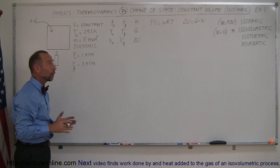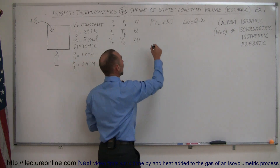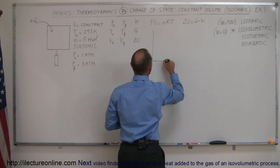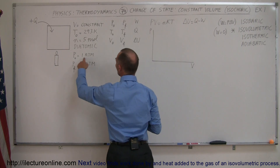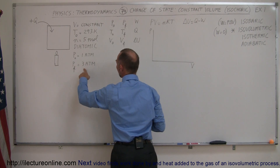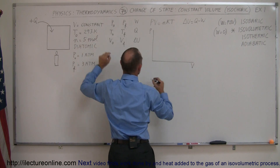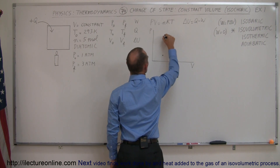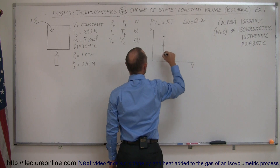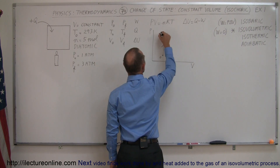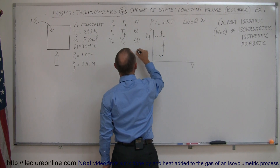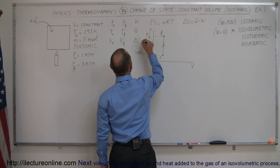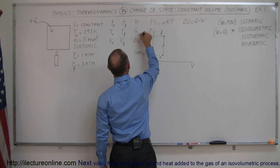It's also a good idea to draw a PV diagram of the process. Here's pressure and here's volume. We start at initial pressure of 1 atmosphere and go to a final pressure of 3 atmospheres, with volume held constant. So the process looks like a vertical line, going from P initial to P final.